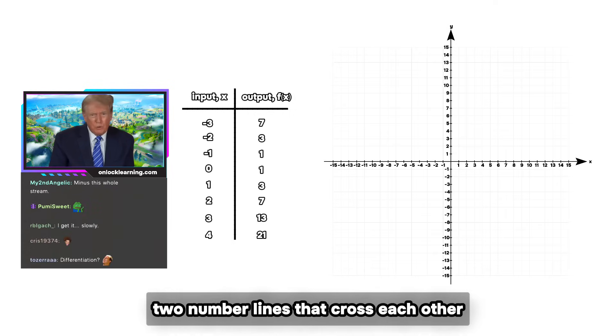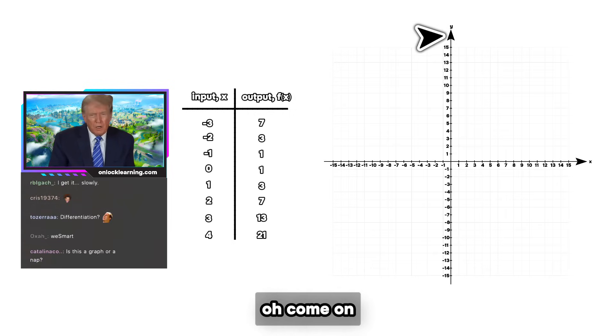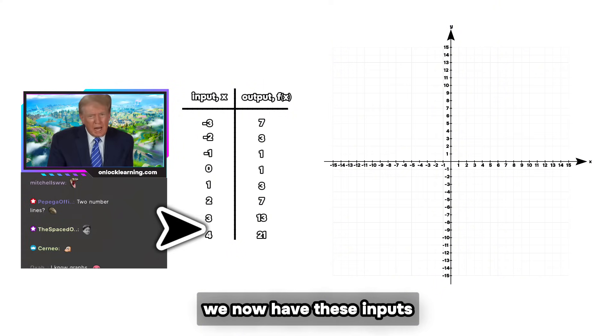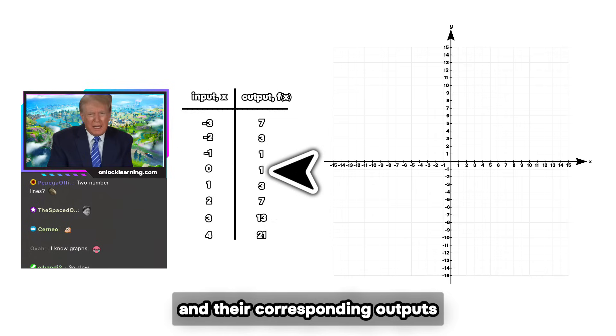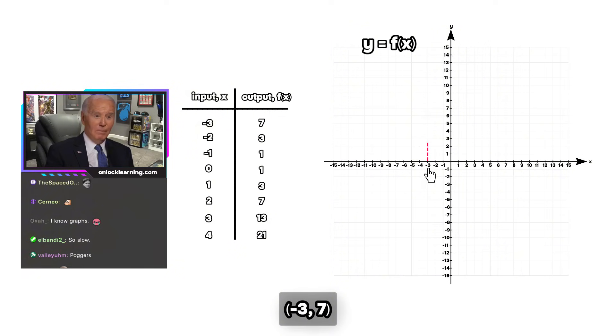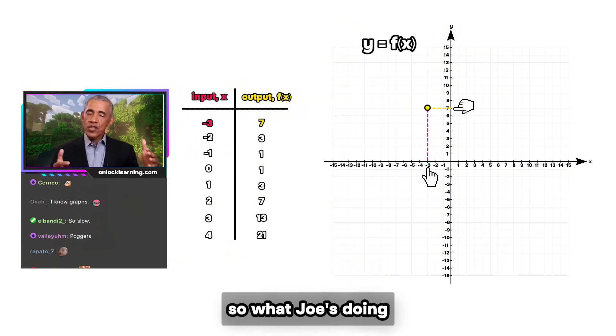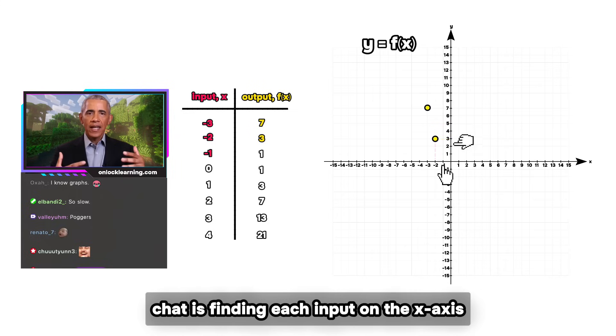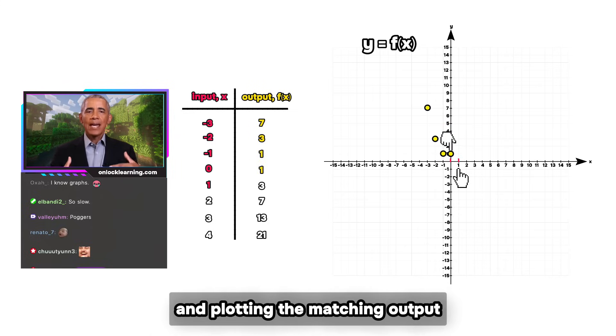Watch the screen. This is called a graph—two number lines that cross each other. Come on, I know what a graph. Shut up and listen. We now have these inputs and their corresponding outputs which we can plot on this graph, right? So minus three, seven. So what Joe's doing, chat, is finding each input on the x-axis and plotting the matching output on the y-axis.